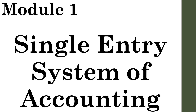So what is meant by a Single Entry System? That is the concept we are going to learn in this module. We know that in Double Entry System, every transaction has two aspects — debit and credit — and we record both. In that case, Single Entry System means recording only one aspect. We may think like that. Partially it is correct, but it is not fully correct.